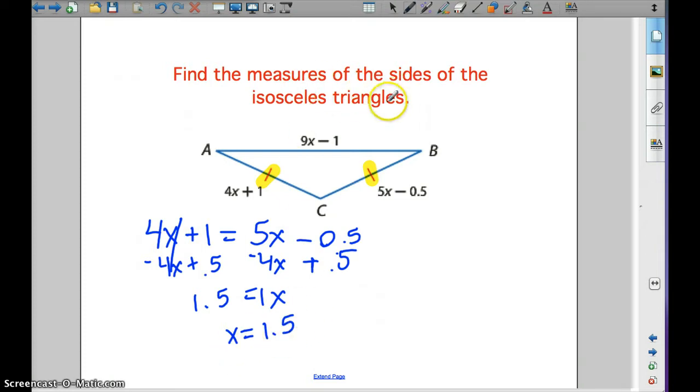It's asking for the measure of the sides, so we need to plug 1.5 back in. If we have 4 × 1.5 + 1, this is AC. AC equals 4 × 1.5 + 1, which is 7.